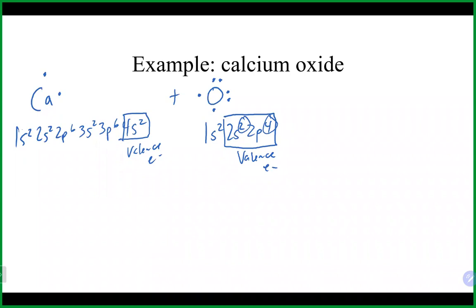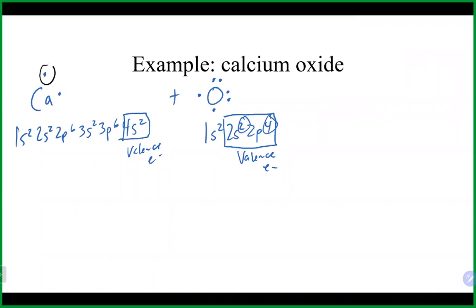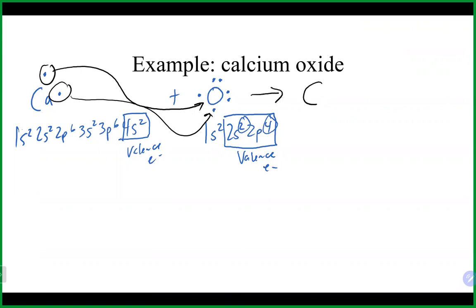Calcium gives both of its electrons to the oxygen, which has room for two more since it only has six. Calcium becomes Ca2+ having lost two electrons. Oxygen gains the two electrons, ending up with all eight electrons and a negative two charge.